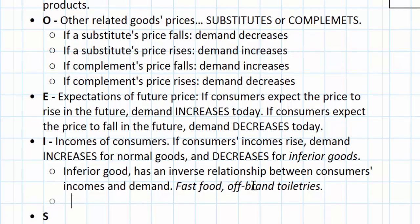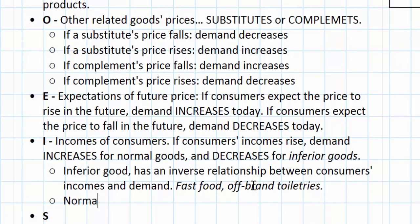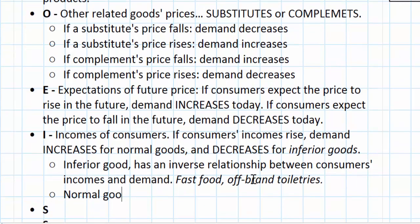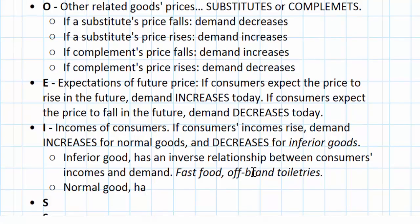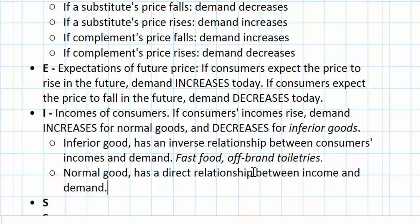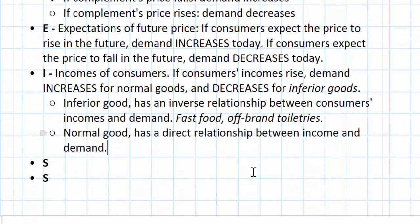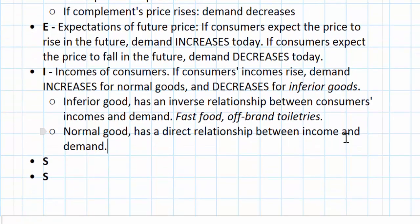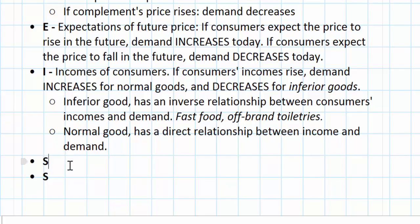Not all goods are like this, of course — there are normal goods, which have a direct relationship between income and demand. The important thing is that you know a change in consumers' incomes will affect the demand for most goods, either positively or negatively, depending on whether the good is a normal good or an inferior good.